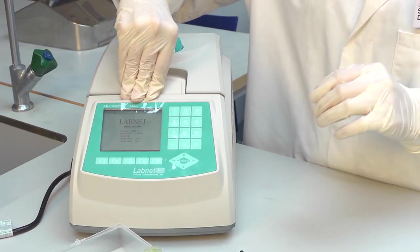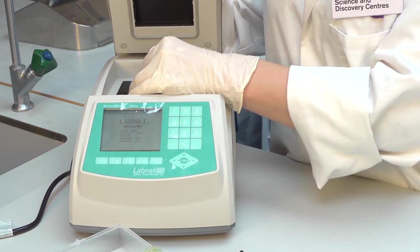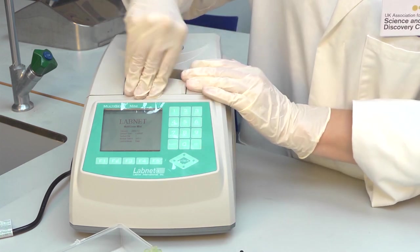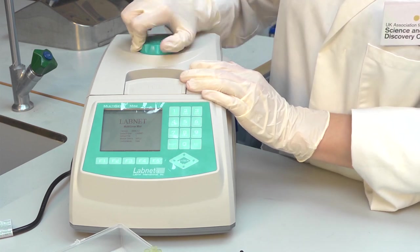Next, simply place your PCR reaction tube into the PCR machine. Close the lid and adjust if necessary to make sure it's closed tightly.